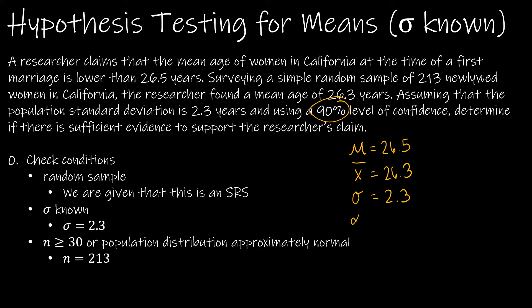Which means alpha—I got confused right in the middle—alpha is 1 minus C, C being the confidence level. So 1 minus 0.9, which is 0.1.